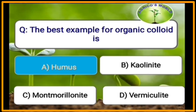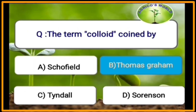The best example of an organic colloid is humus. Humus is amorphous in nature. The term colloid was coined by Thomas Graham.